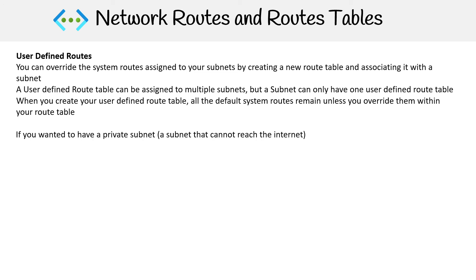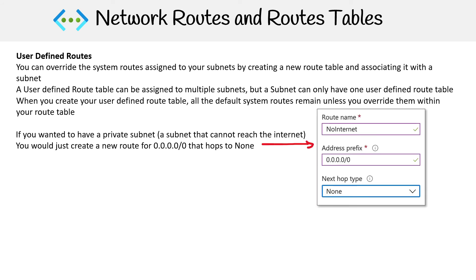A good example would be if you wanted to make sure no internet traffic could reach your subnet — like creating a private subnet. You'd have to override the route to the internet and set the hop to none. Over here on the right-hand side, I'll call my route 'no internet', give it the same address prefix, and set it to none. That will override the original route.